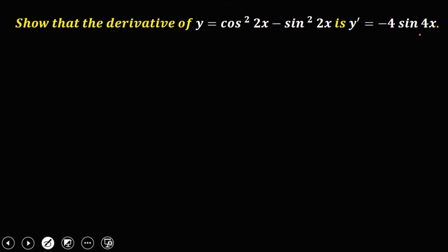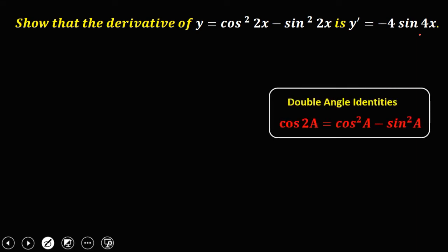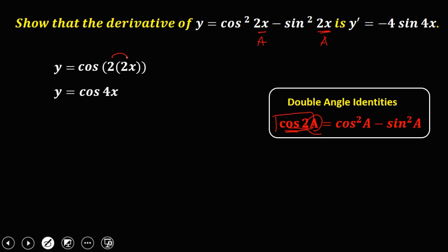For the final given: show that the derivative of y equals cosine squared 2x minus sine squared 2x is negative 4 sine 4x. Using the double angle identity — cosine squared a minus sine squared a equals cosine 2a — with a equal to 2x, y simplifies to cosine 4x, since 2 times 2x equals 4x.